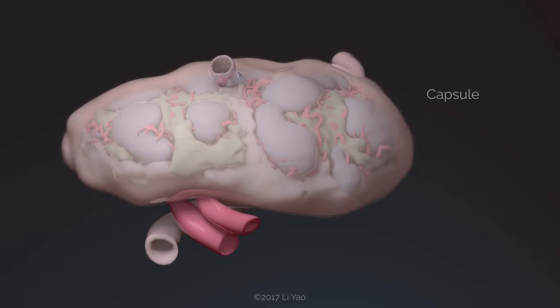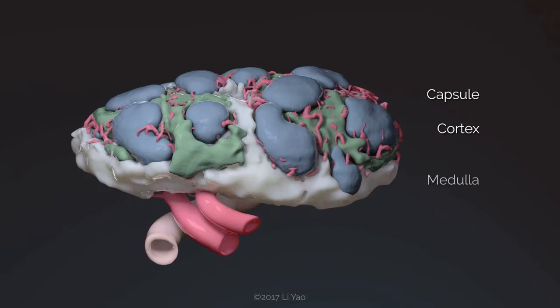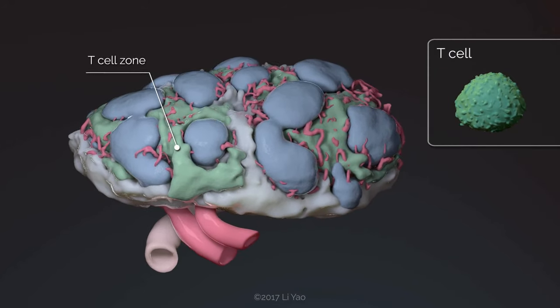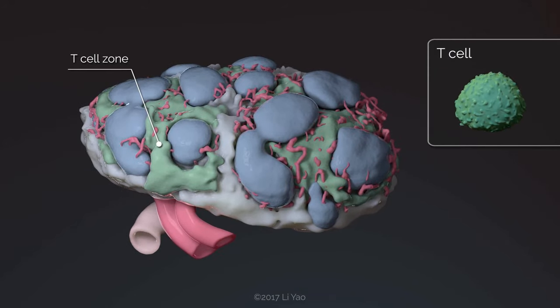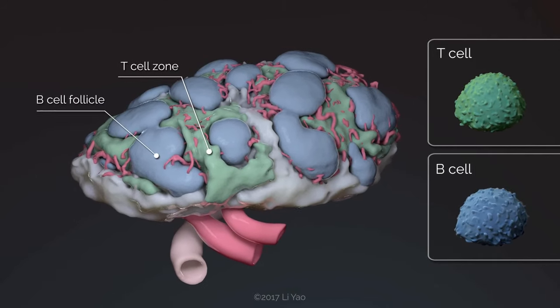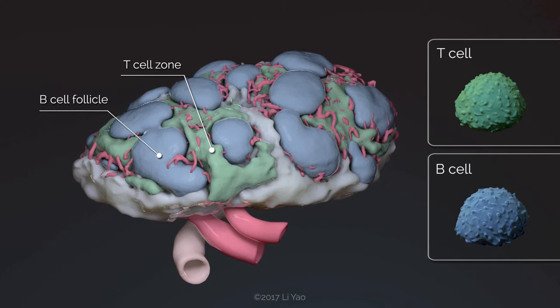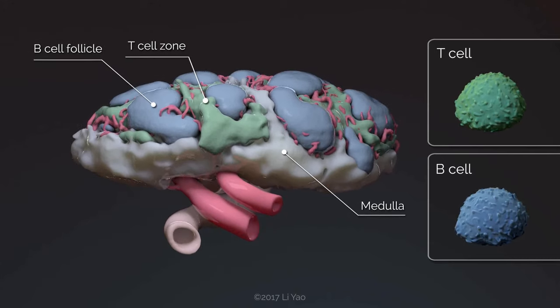A lymph node is composed of the capsule, cortex, and medulla. T-cells are clustered in the T-cell zones in the paracortex, while B-cells reside primarily in the follicles of the outer cortex. The medulla contains sinuses and medullary cords.